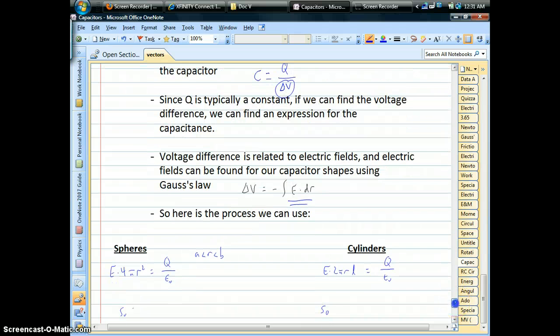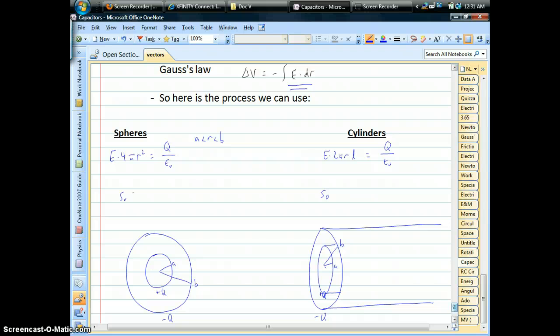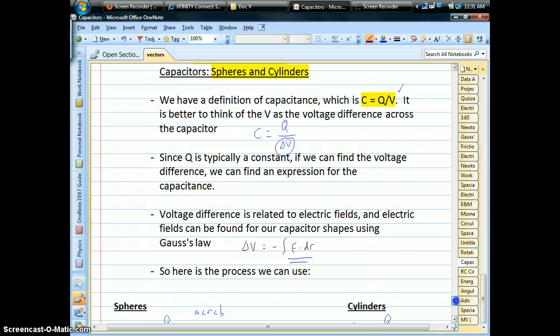And so the process we're going to use is Gauss's law to find electric fields, integrate those electric fields between the gap in order to find the voltage difference, and then simply plug it in to our definition, Q divided by delta V.